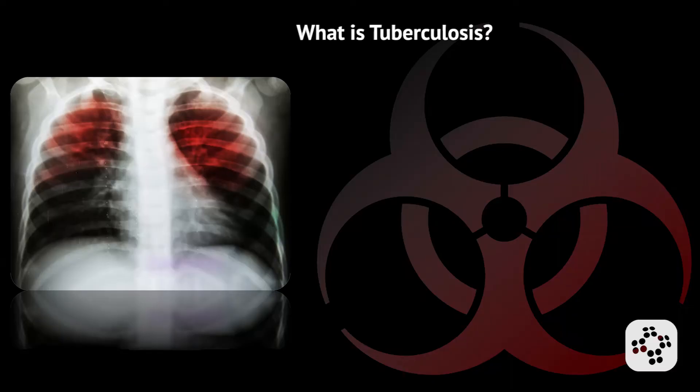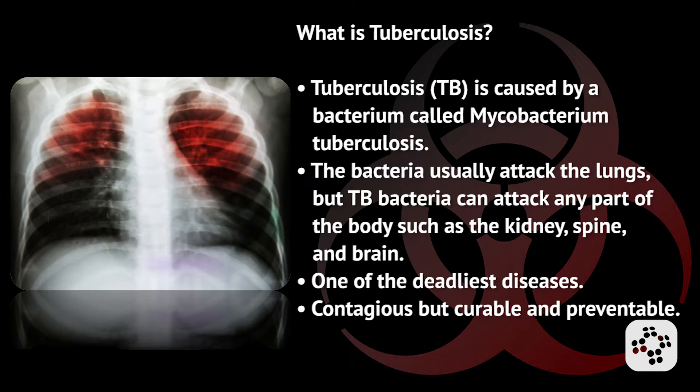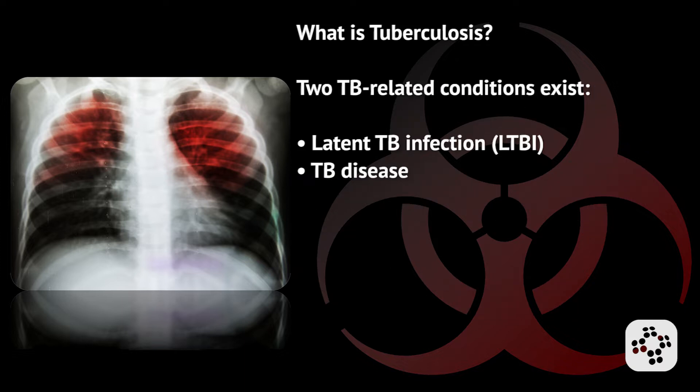What is tuberculosis? Tuberculosis, or TB for short, is caused by a bacterium called Mycobacterium tuberculosis. The bacteria usually attacks the lungs, but TB bacteria can attack any part of the body such as the kidneys, spine, and brain. It's one of the world's deadliest diseases and is contagious, but it's curable and preventable. Two TB-related conditions exist.